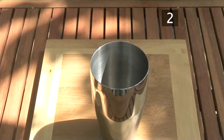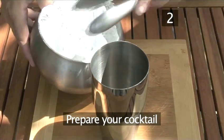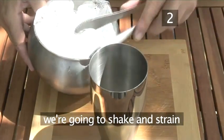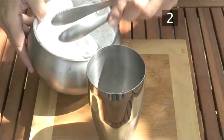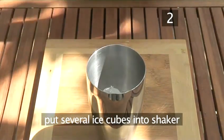Step two. Prepare your cocktail. We're going to shake this cocktail and then strain it into the Collins glass. First, put several ice cubes into the shaker.